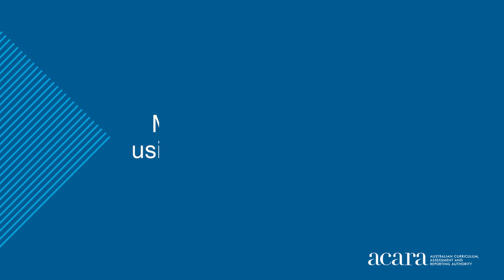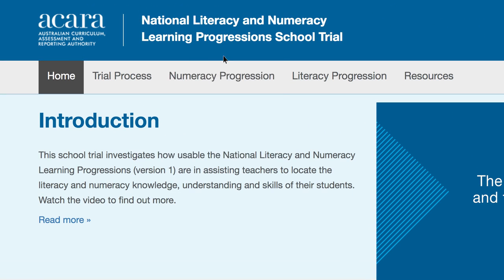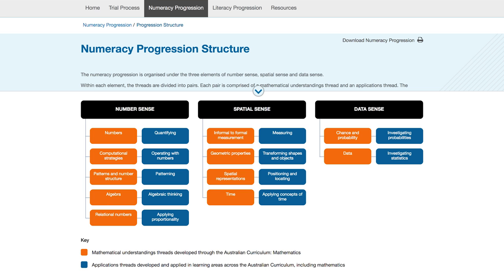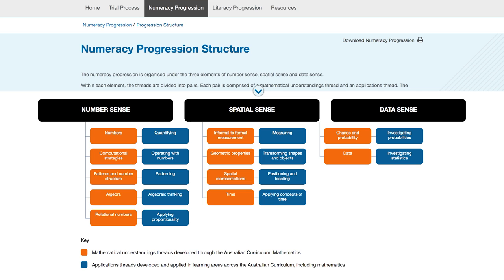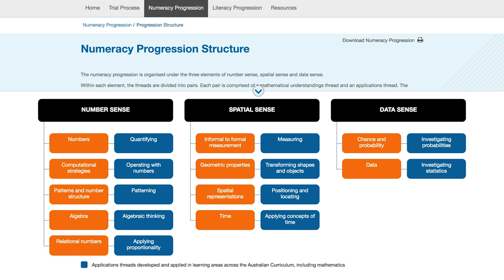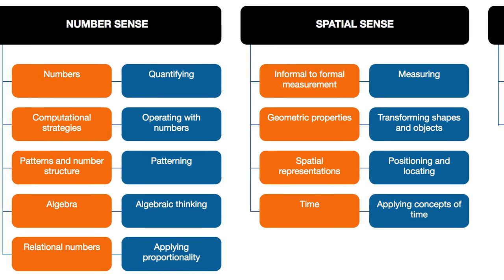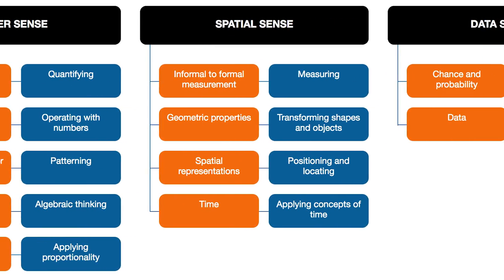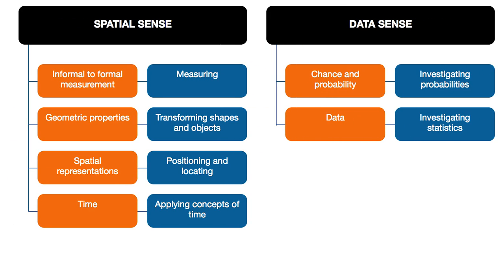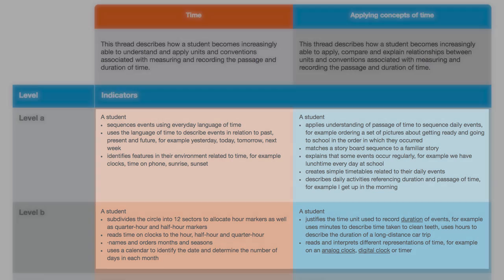To help you make judgements, there are a few points about the structure of the learning progressions to explain. Each progression has three elements, and a number of threads under each element. The threads represent the important components of literacy or numeracy development, as shown in the available evidence and research. Each thread includes descriptions of what a student says, does, or produces, at increasing levels of sophistication.